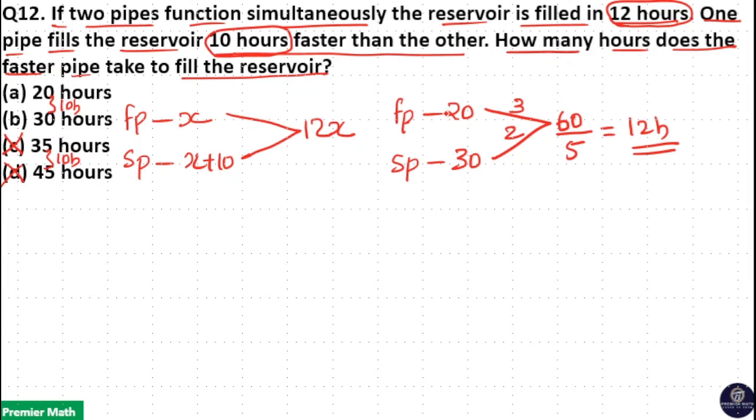That means the faster pipe takes 20 hours to fill the tank. So, option A is your right answer.